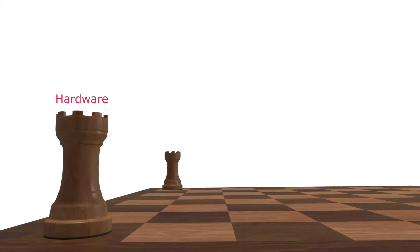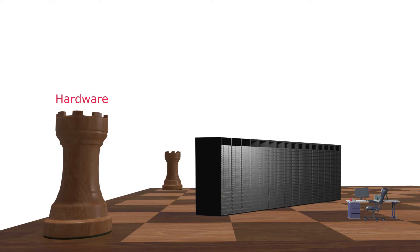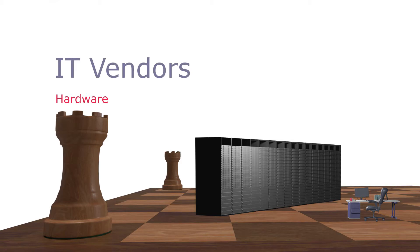IT infrastructure describes all of the systems which are required to connect and run applications, from the desktop through to the data center. This comprises servers, networking and data storage. The organizations which make this equipment are generally called IT vendors or manufacturers. Vendors also include the providers of the software and applications.